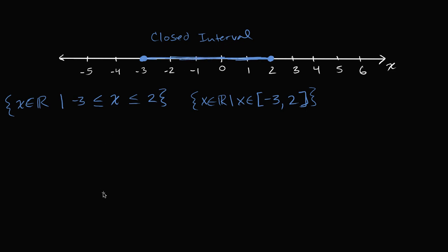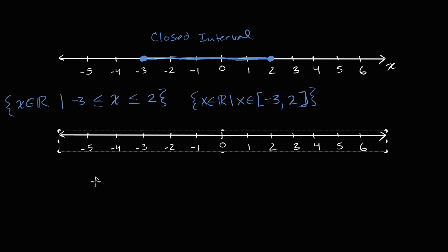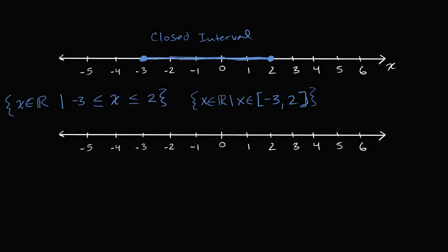Let's do more examples. Let me draw another number line and now do an open interval so we can clearly see the difference. Let's say I want to talk about the values between negative one and four, but I don't want to include negative one and four — so this is going to be an open interval. I'm not going to include four, and I'm not going to include negative one. Notice I have open circles here. Negative 0.999999 is going to be included, but negative one is not. And 3.999999 is going to be included, but four is not.